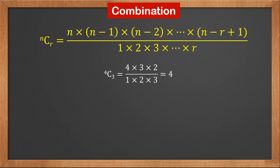4C3 is 4 times 3 times 2 divided by 1 times 2 times 3. It is 4. 8C4 is 8 times 7 times 6 times 5 divided by 1 times 2 times 3 times 4. It is 70.